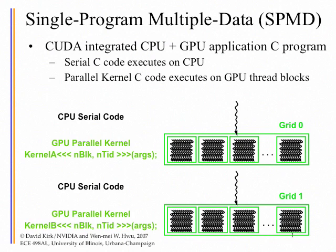Parallel kernels execute on GPU thread blocks. A typical scenario is you execute CPU serial code for a while, then you make a kernel call specifying the number of blocks and threads, incurring all the threads in the grid. The grid is organized into blocks, and each block has multiple threads — up to 512 threads per block. Then you do more CPU serial code, and then another kernel call. In a bigger application you can have multiple data-parallel phases.